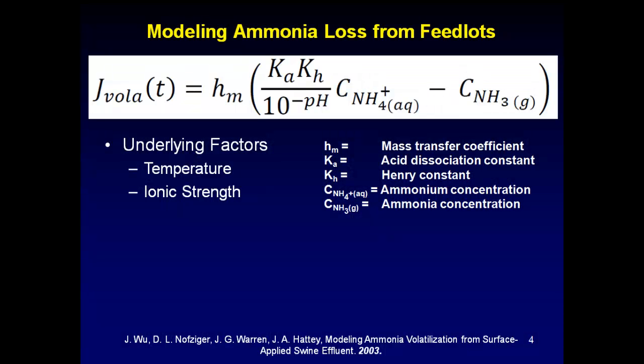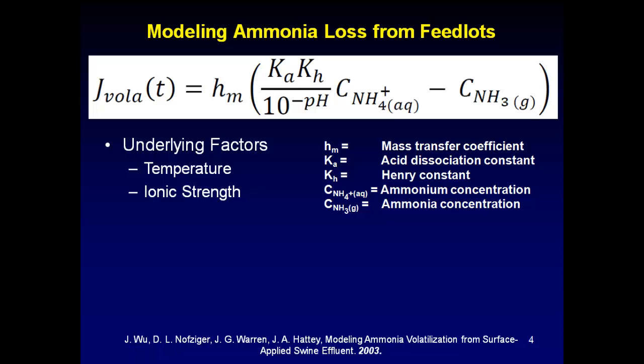A lot of people have tried to model this. This is one of the models by Lube Knofsinger. Basically, what you see here is J, the volatilization flux — how much material per area per time. It's related to H(M), which is the mass transfer coefficient, which comes down to soil type and soil physics. And then this gradient: essentially how much ammonium is in the soil — C-ammonium here, the variable ammonium in the system — and then the ammonia gas above the surface. There are tons of variables in there, but basically these four variables are all pretty much chemically related.